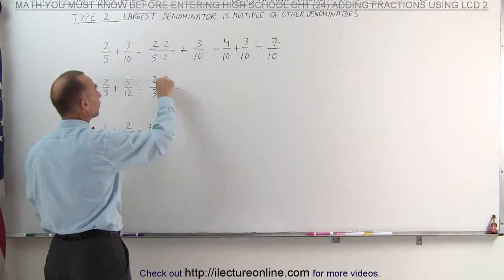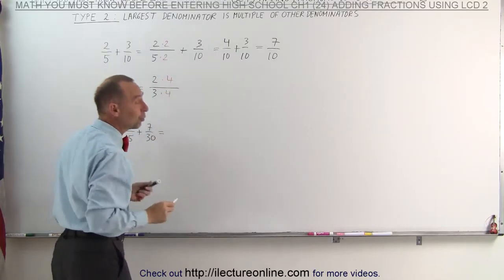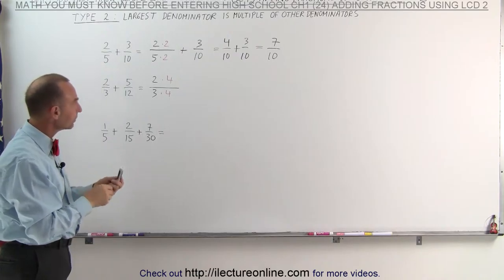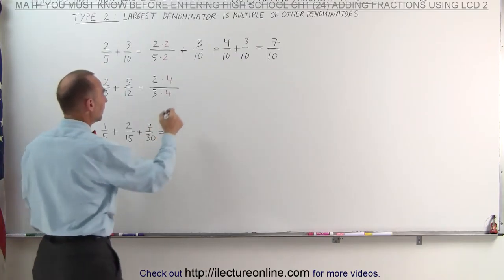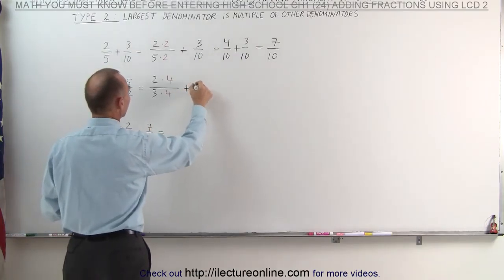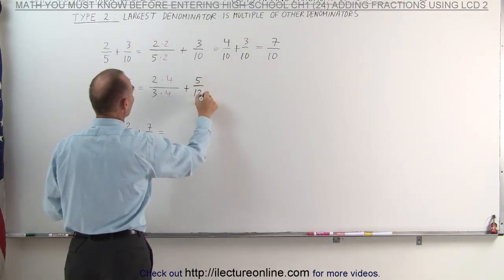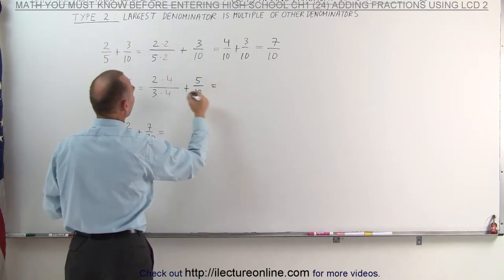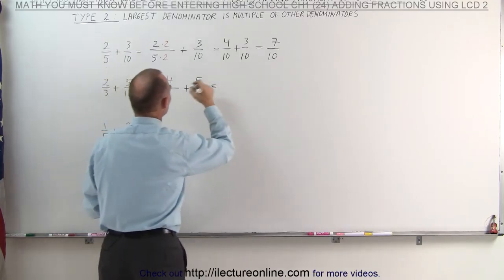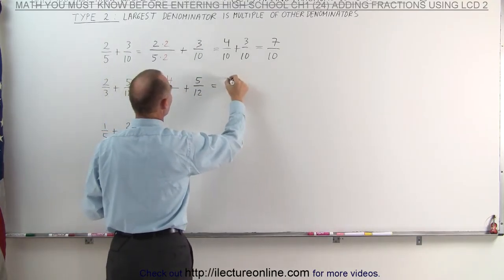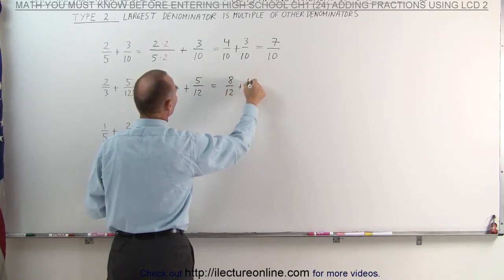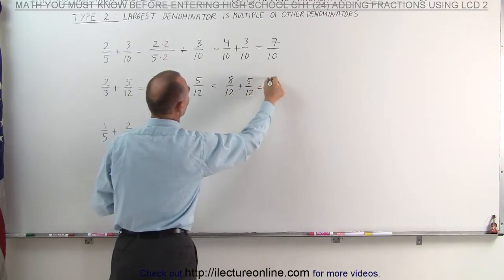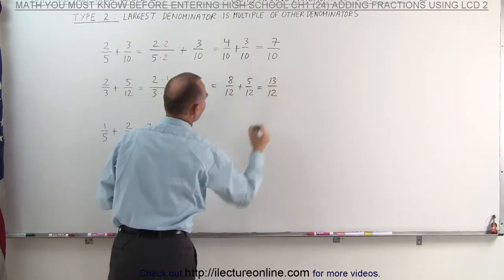If I do that to the denominator, I must do exactly the same to the numerator. The other fraction remains unchanged because the denominator is already the lowest common denominator. Now we get 2 times 4, which is 8 over 12, plus 5 over 12, which is 13 over 12.